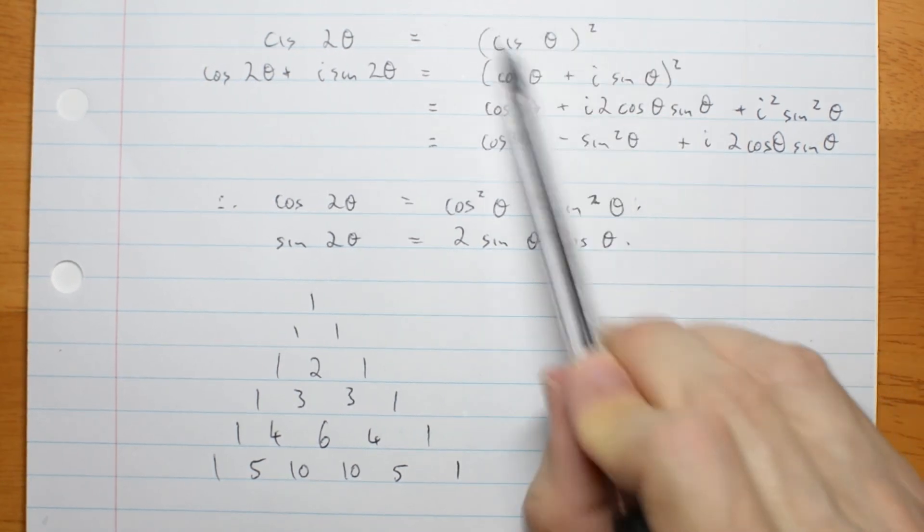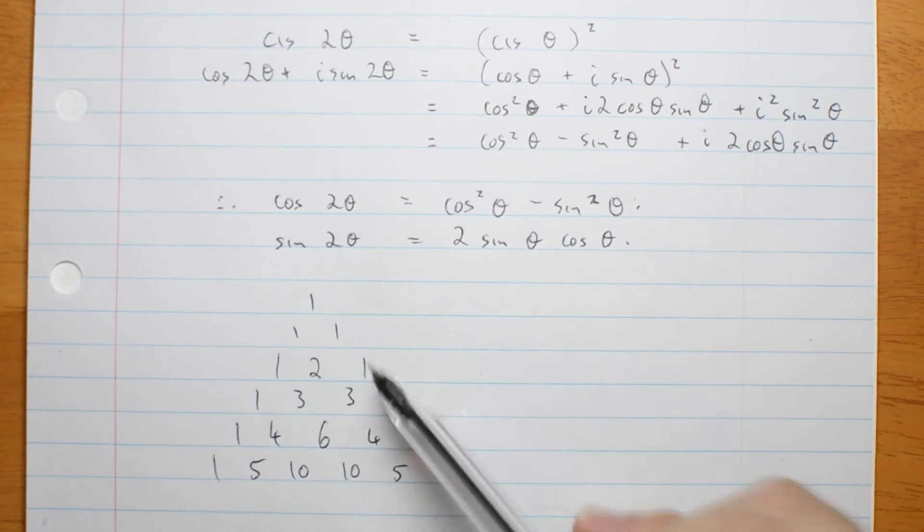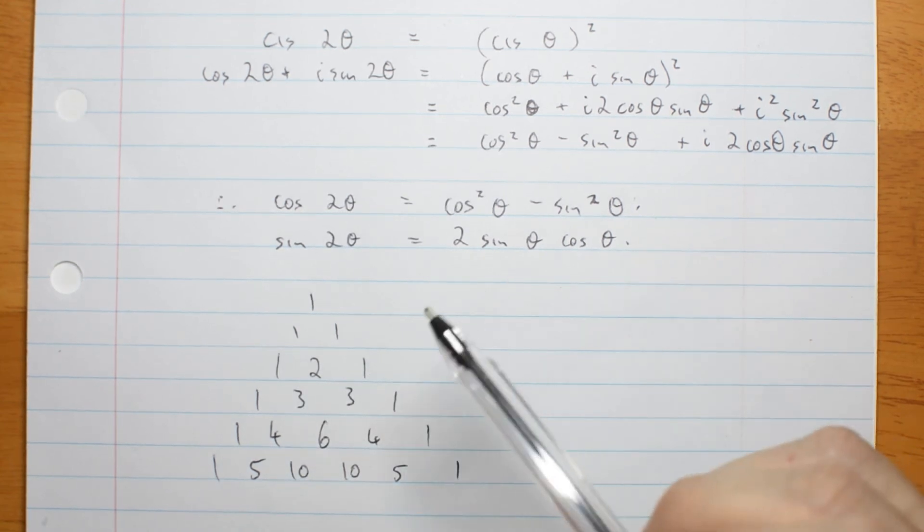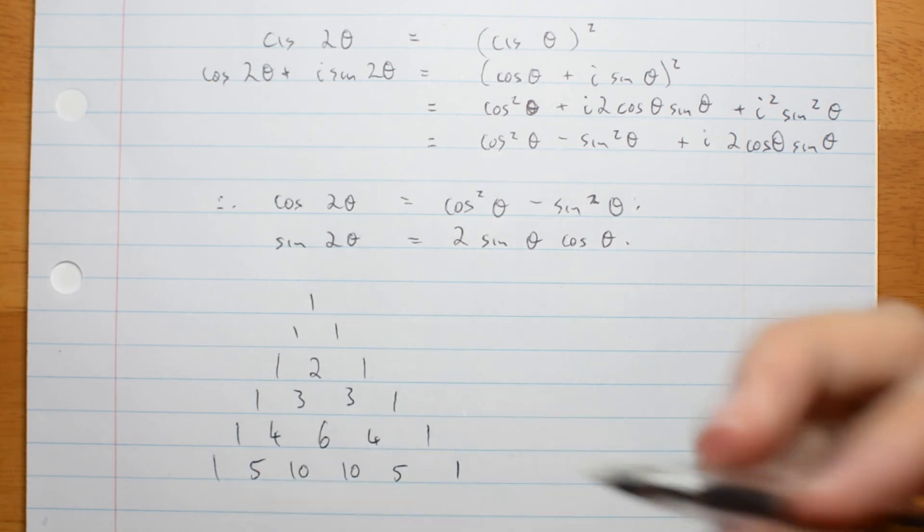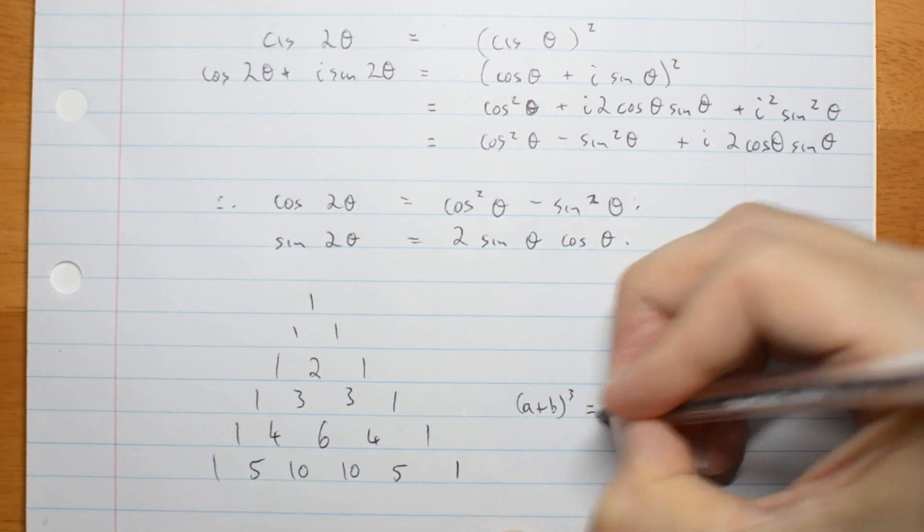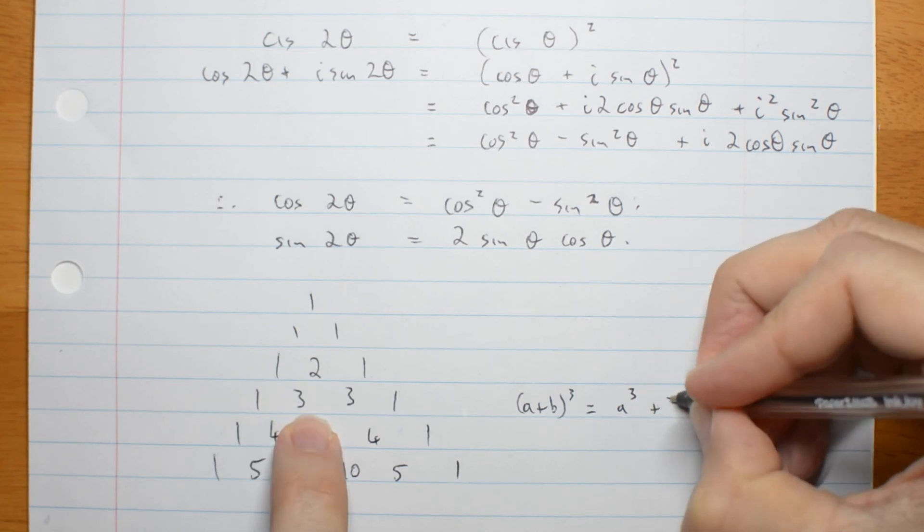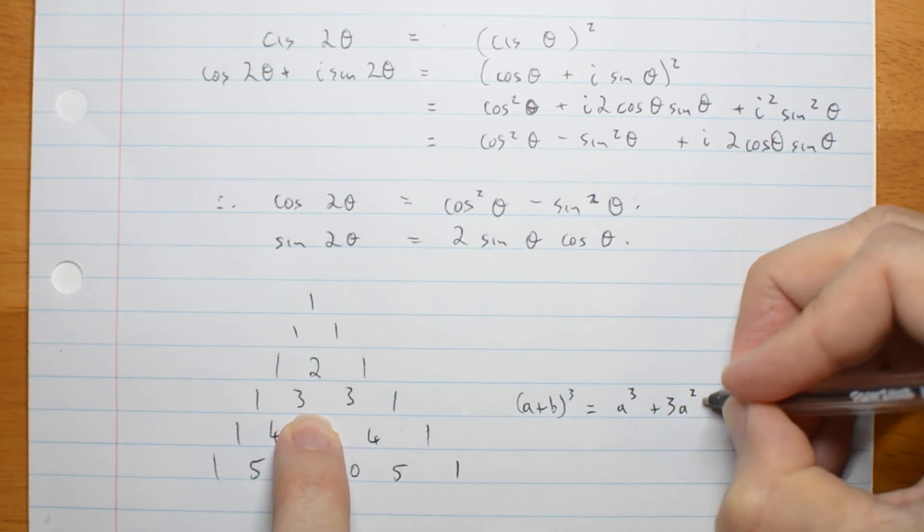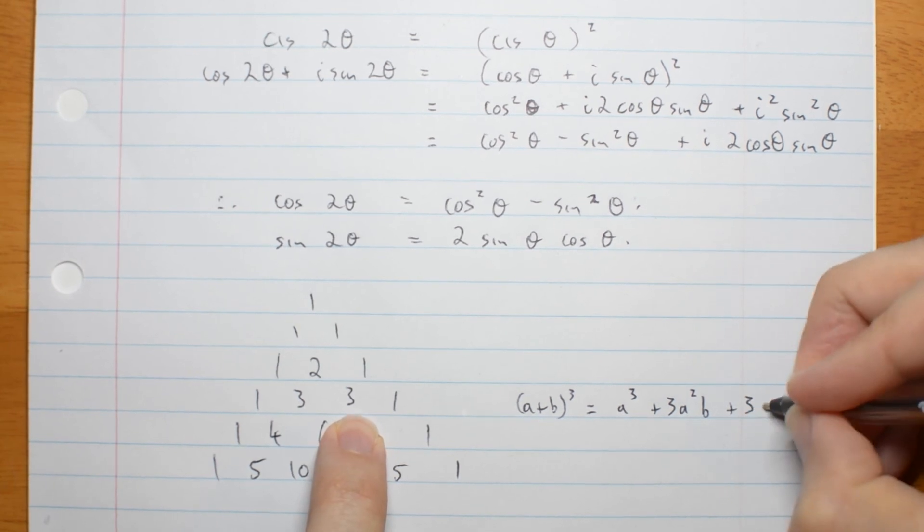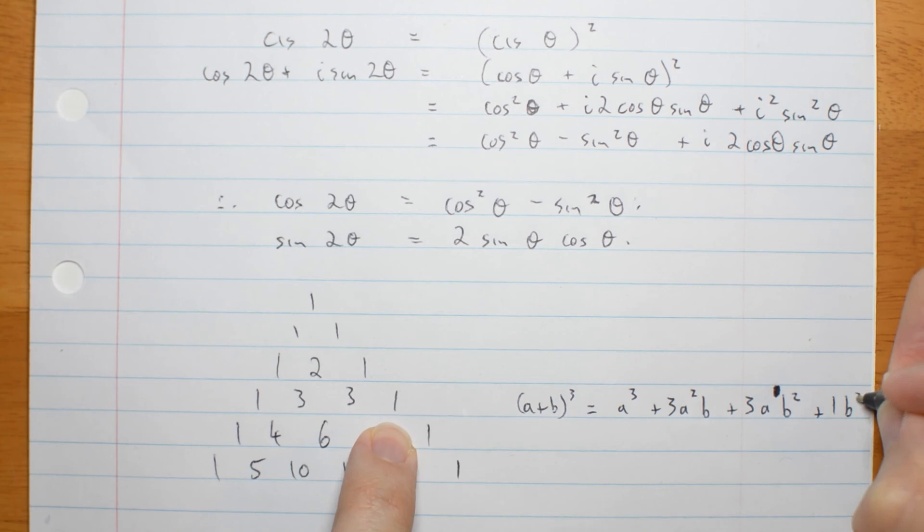So, the expansion of a plus b squared is a squared plus 2ab plus b squared. The expansion of a plus b cubed is, maybe I should write it, a plus b cubed. Here's what you do. You go 1a cubed, 3, you decrease a's power and you increase b's power, a cubed... sorry, a to the 1b squared went the wrong way, plus 1b cubed.